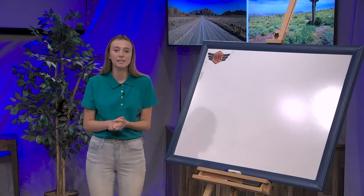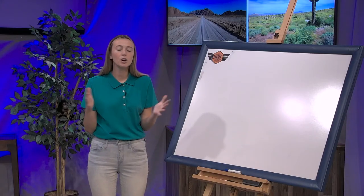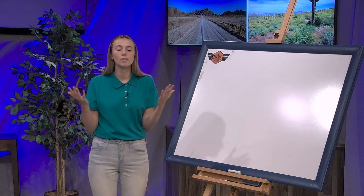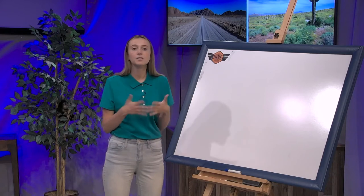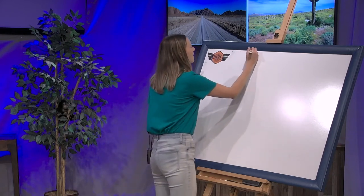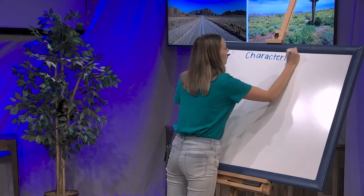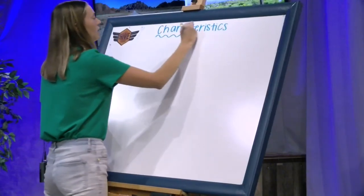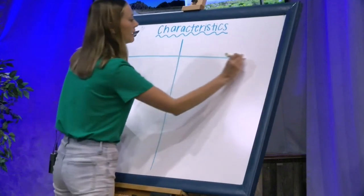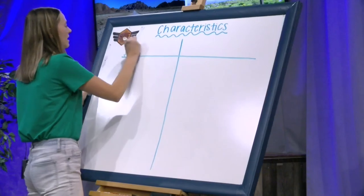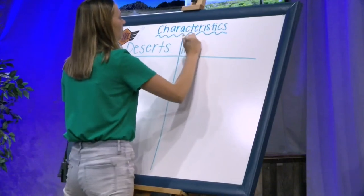The first biome we're going to talk about is a desert. Hopefully you've already written down your keywords. We're going to make a T-chart where we talk about the different characteristics of deserts and tropical rainforests. Write 'characteristics' at the top as your title, then draw a big T. On one side write 'deserts,' and on the other side write 'tropical rainforests.' Notice that A-I makes a long A sound — rainforest.